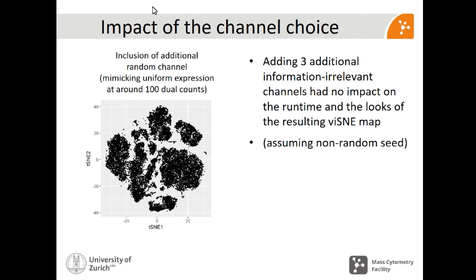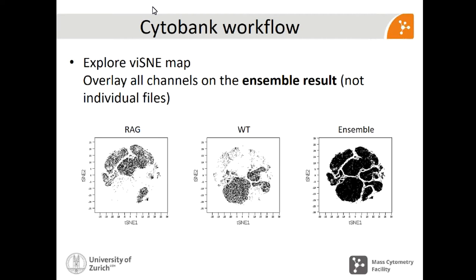Then I made a synthetic noise channel mimicking no expression — being sure it was random because it hadn't been really acquired — and that also had no impact. Then I included yet another additional channel, again random, but this time mimicking a uniform expression at around 100 ion counts. It looks exactly the same. Basically, adding three irrelevant channels had no impact on the runtime and the looks of the resulting viSNE map, assuming that you have a non-random seed. This was done offline in R. With that said, you choose the parameters to run the viSNE map.